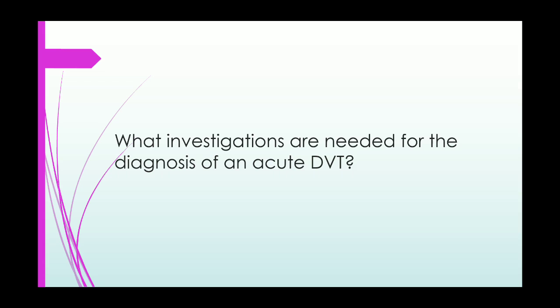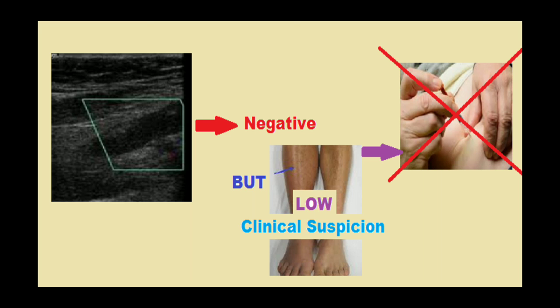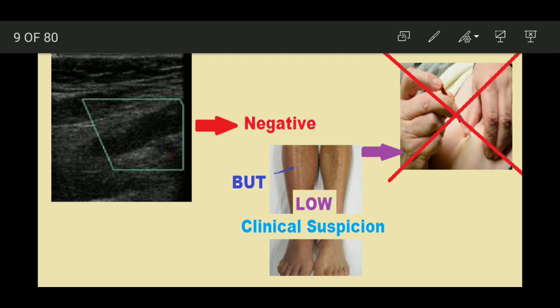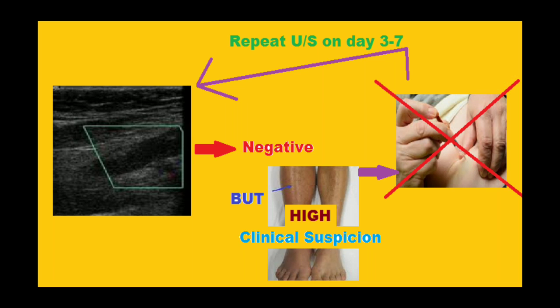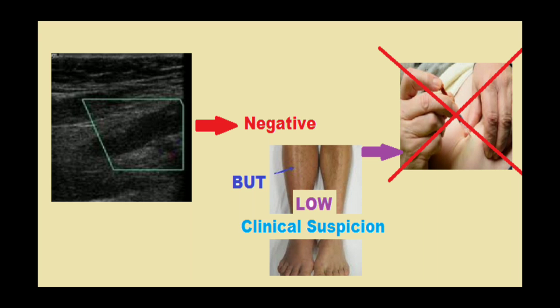For investigations needed in acute VTE diagnosis: compression duplex ultrasound should be undertaken where there is clinical suspicion of DVT. If ultrasound is negative and there is low clinical suspicion, anticoagulant treatment can be discontinued.